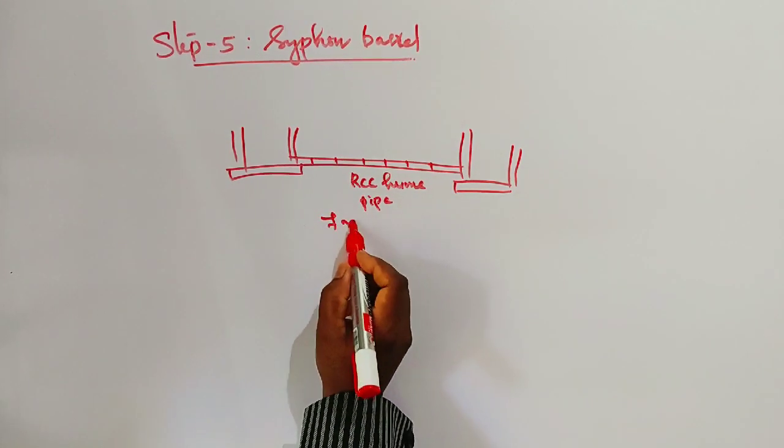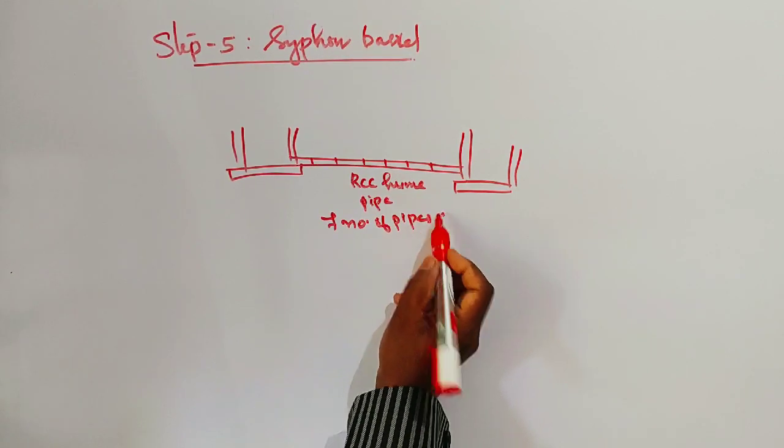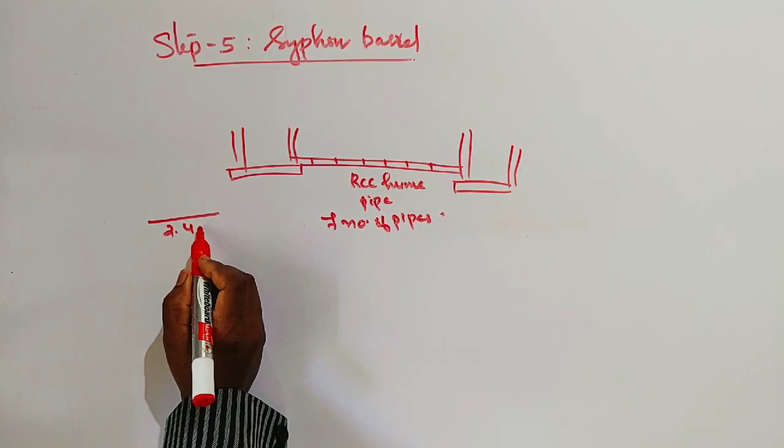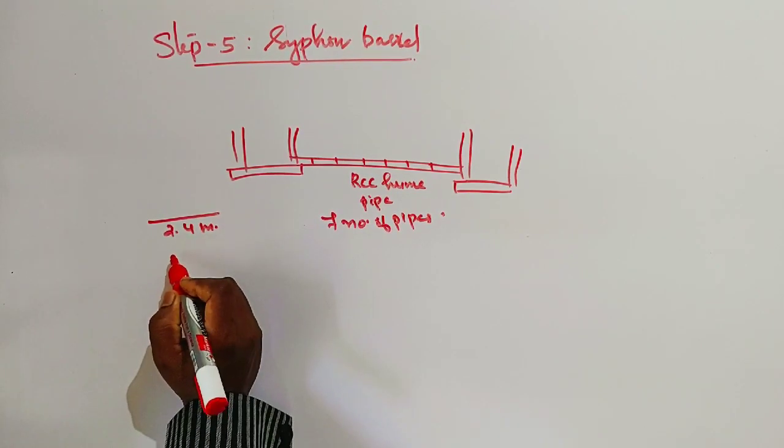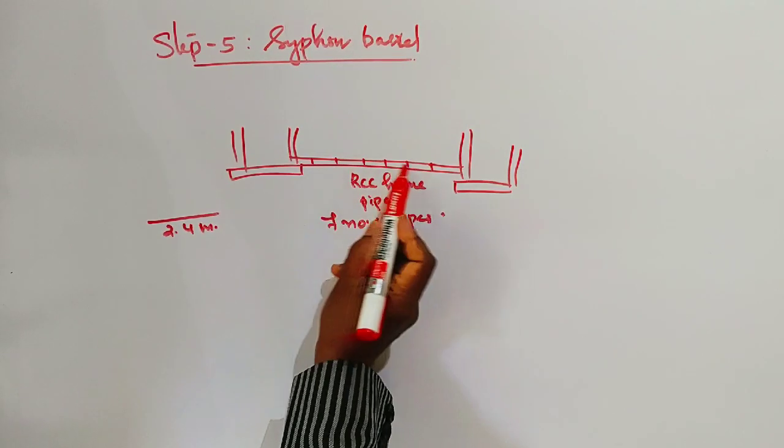We have 7 number of pipes. Each pipe is 2.4 meters in length, for a total length provided by 7 pipes.